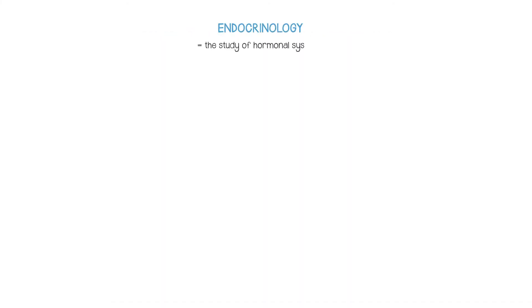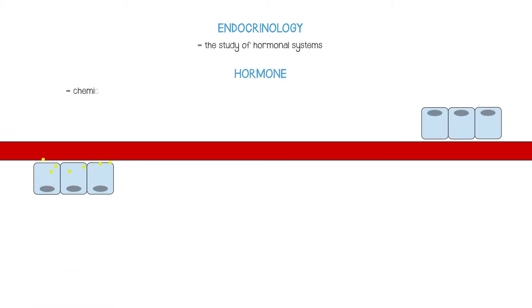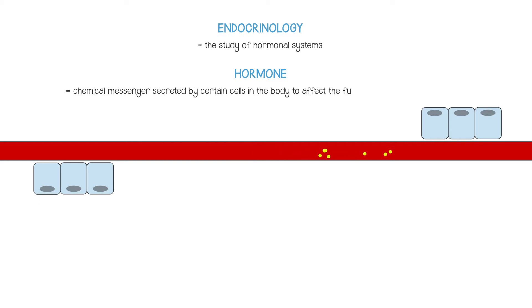Endocrinology is the study of hormonal systems. A hormone is a chemical messenger which is secreted by certain cells in the body to affect the function of more distant cells. The most important part of the definition of a hormone is that it is secreted into the blood.